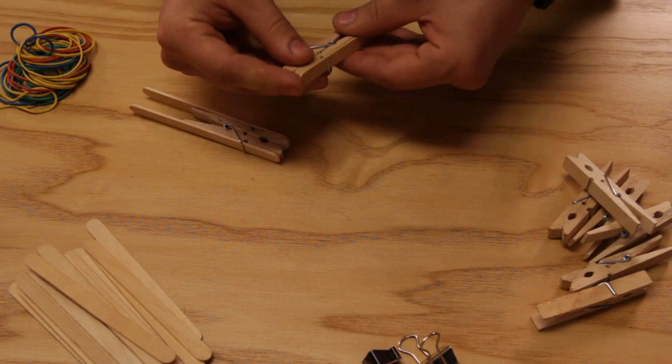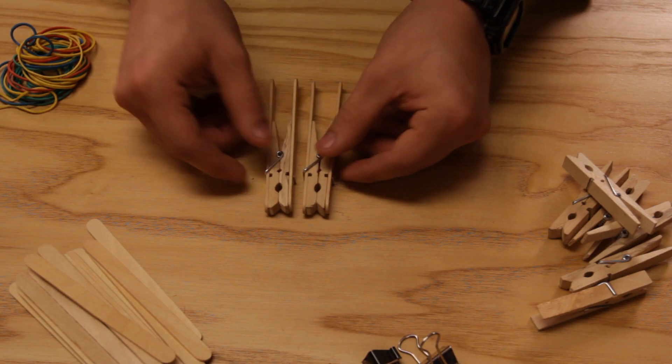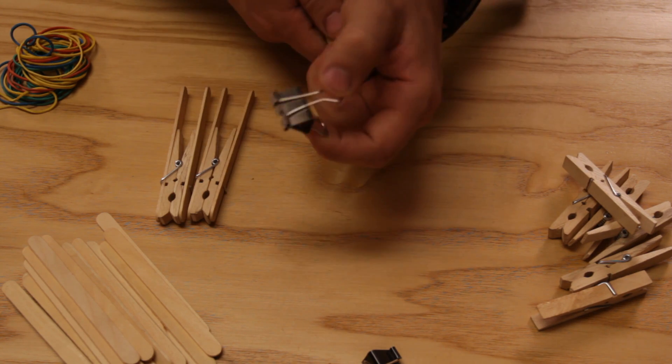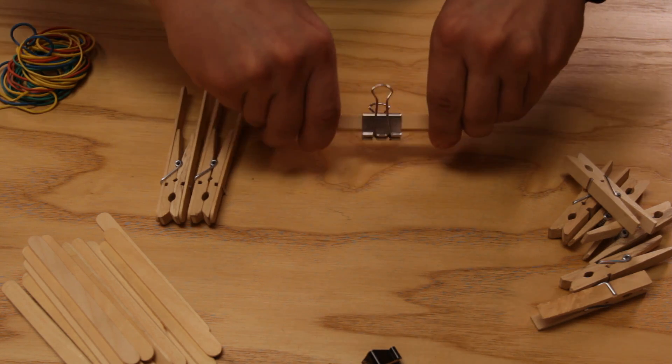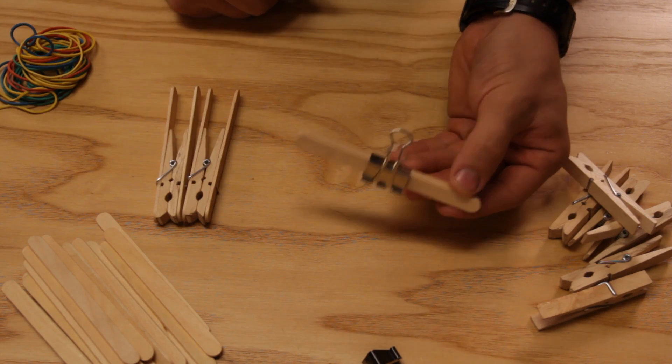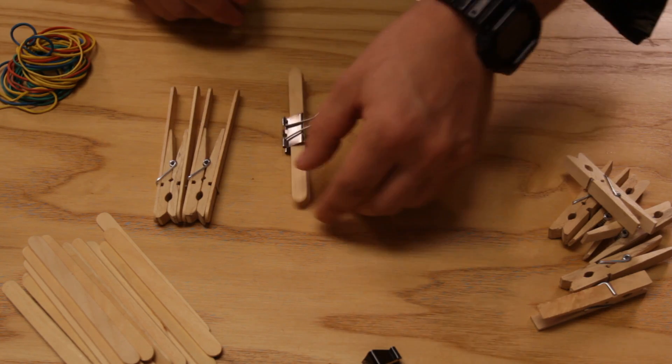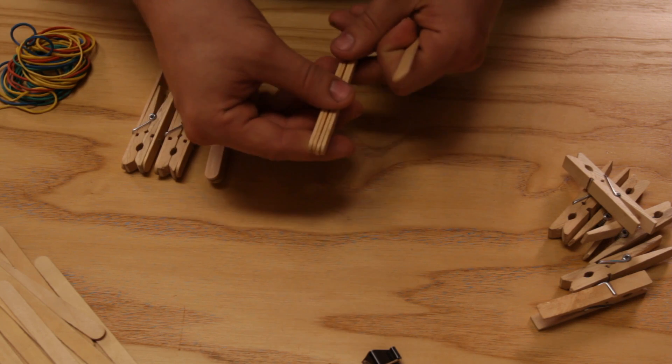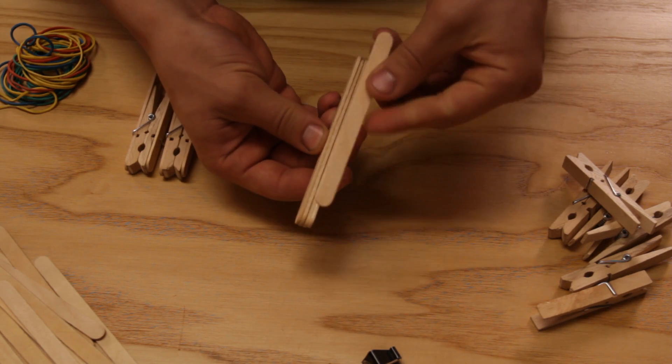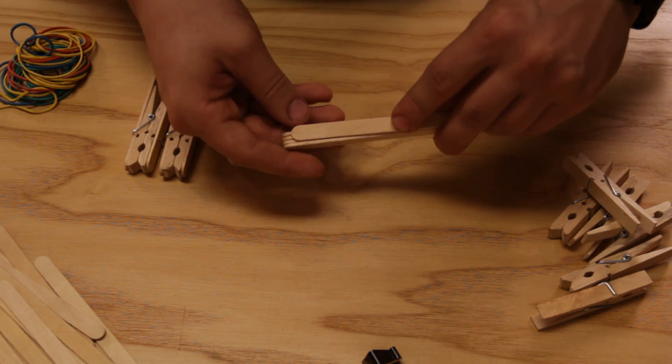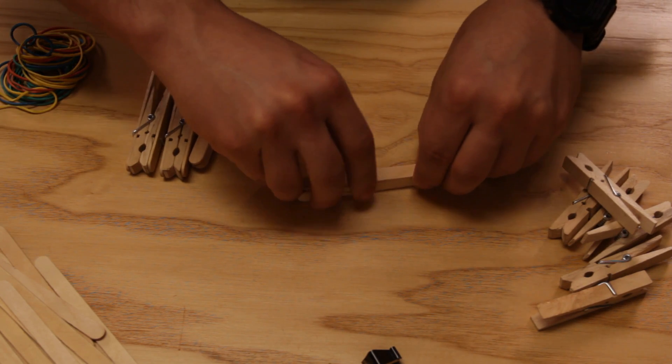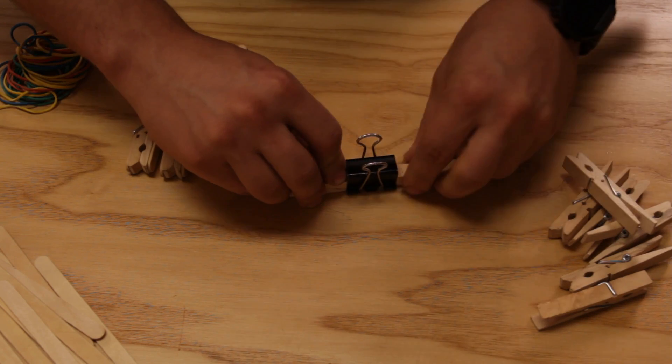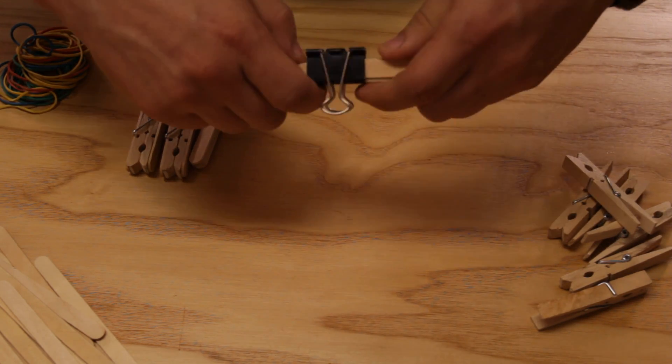The next step is to take three popsicle sticks and one of these paper clips, and clip it right in the middle like this. This is going to be the top. The bottom of the frame consists of five popsicle sticks. Have four lined up and the fifth one laid right on top. Then take the biggest paper clip and put it right in the middle.